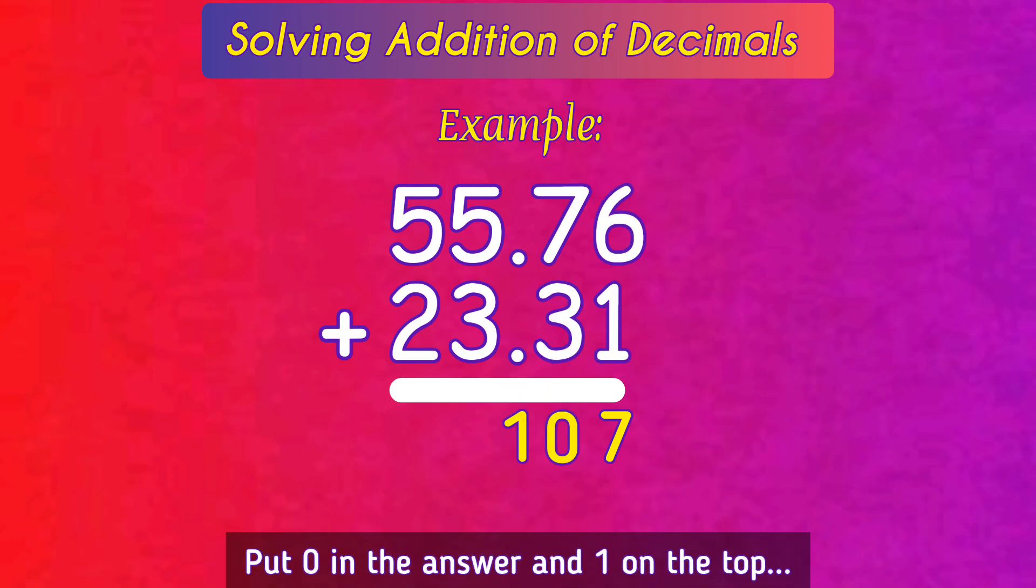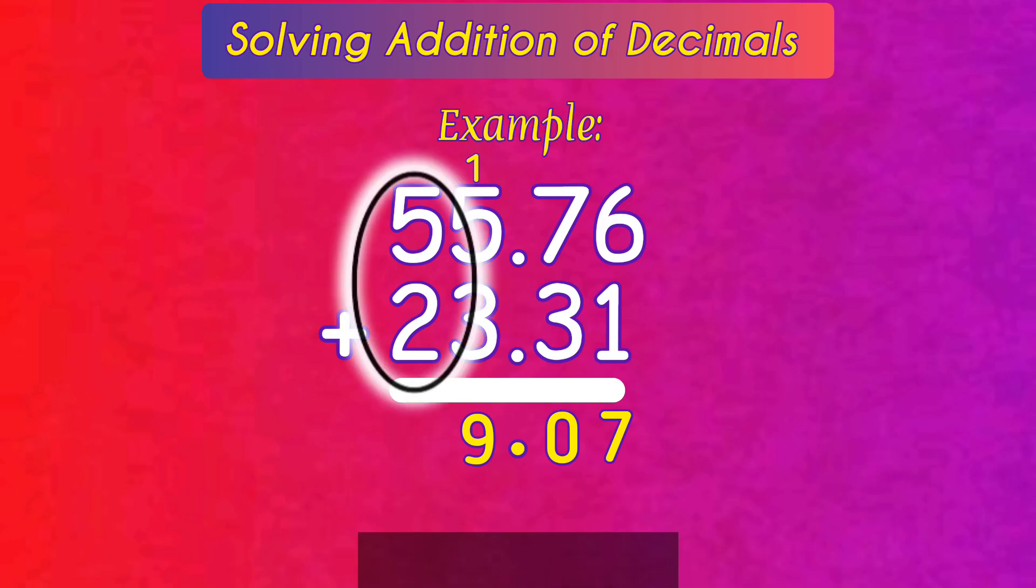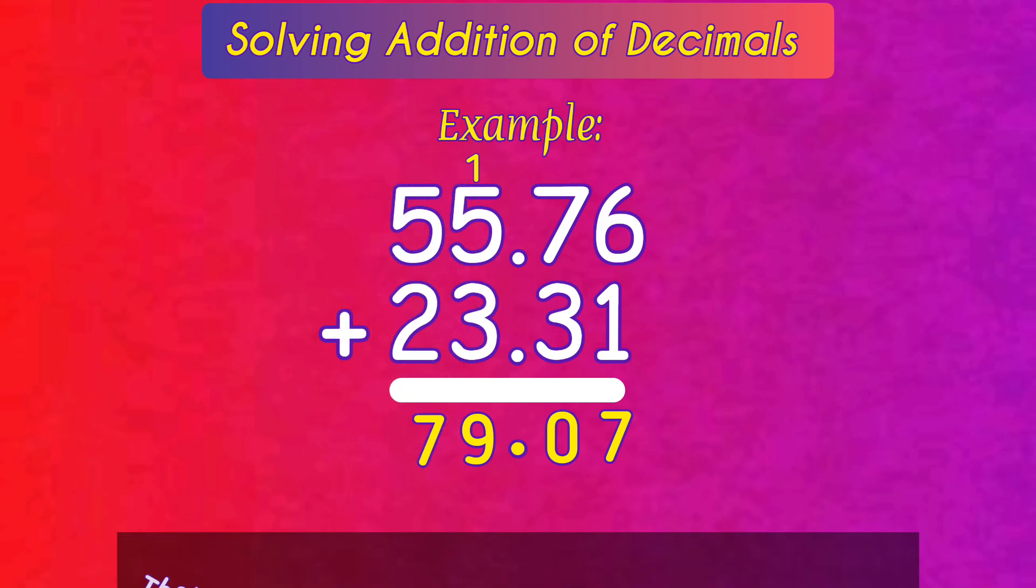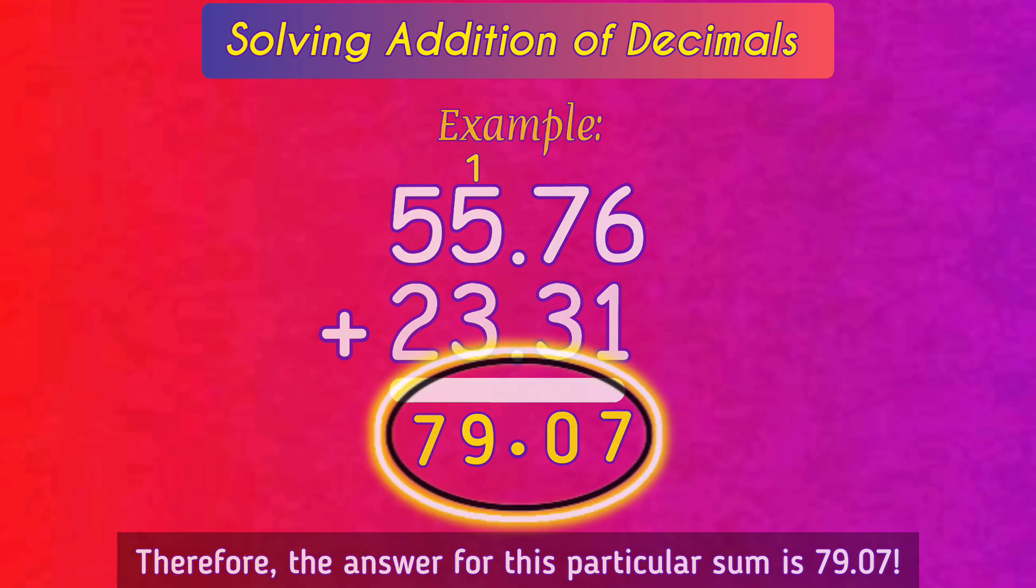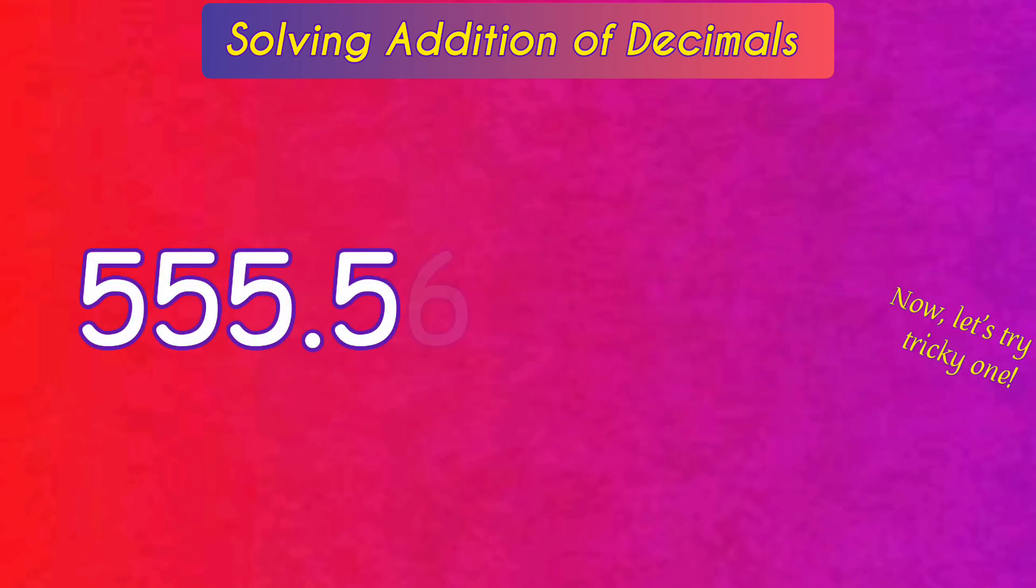Put 0 in the answer and 1 on top. The decimal point should come next. Now 1 plus 3 plus 5 is equal to 9, keep 9 in the answer. Next, 2 plus 5 is equal to 7. Therefore the answer for this particular sum is 79.07. Pretty easy, right?